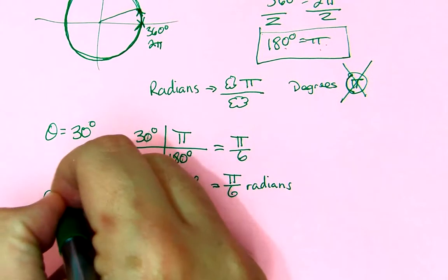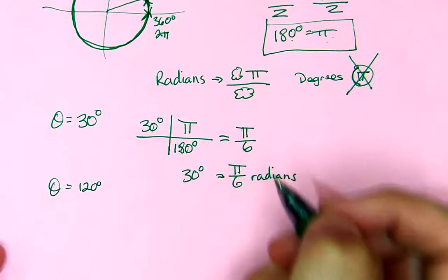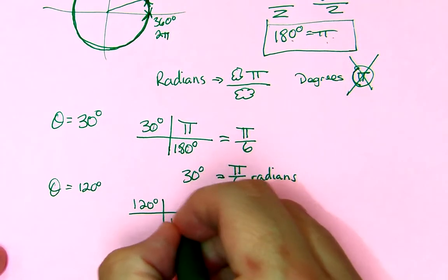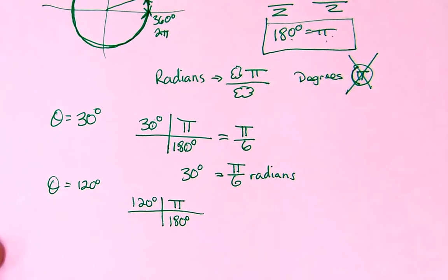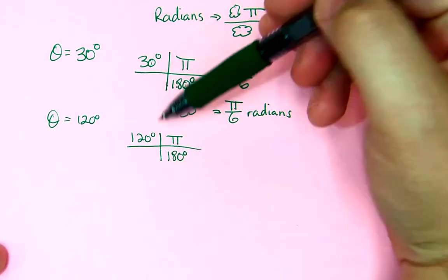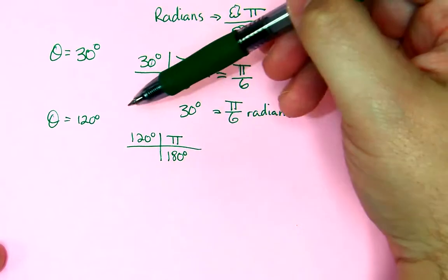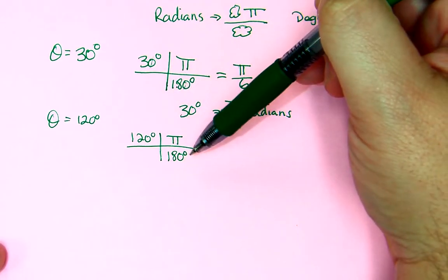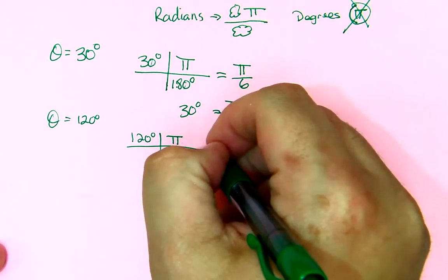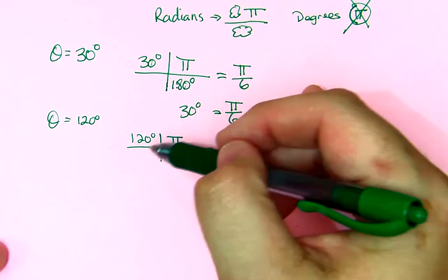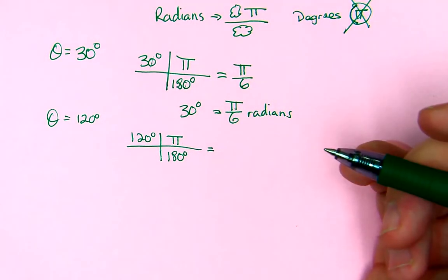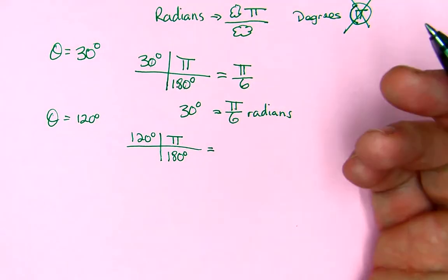Say θ is equal to 120 degrees. Same thing. 120 degrees. We use our conversion factor this way. So, this is a lot like chemistry, where you have your conversion factors, and you can divide units. So, we're dividing out our degrees, and we're left with radians.